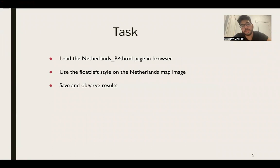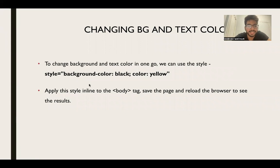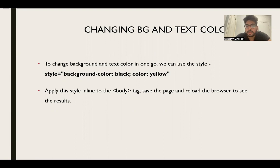That was easy — we were just adding style as an attribute. Next, we're changing the background and text color. Now we're going to use style inside the body tag. Use style equals, with background-color as black — property is background-color, value is black — then semicolon, then property color colon yellow for the text color. Go ahead and pause the video and try making these changes.